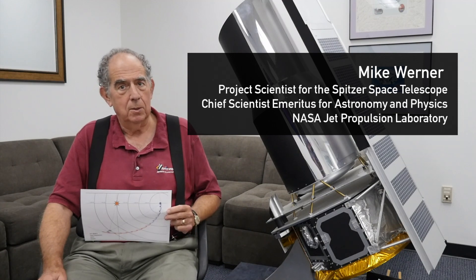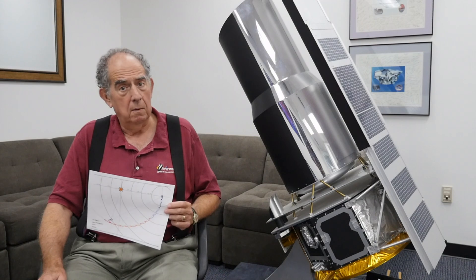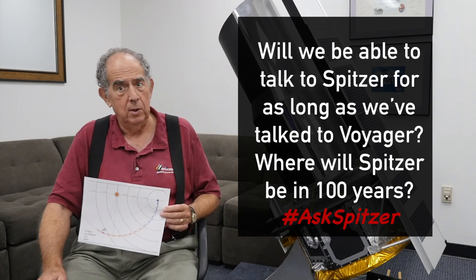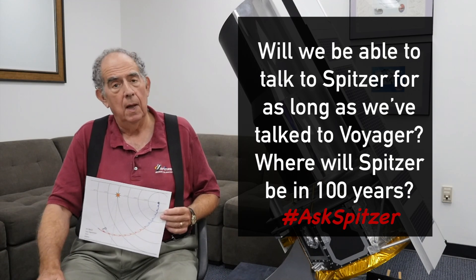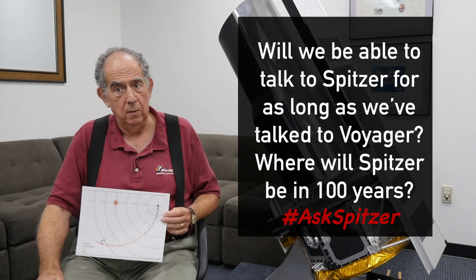I've been asked to answer the question: can we talk with Spitzer as long as we talk with Voyager, which is 40 years, and where will Spitzer be in 100 years?